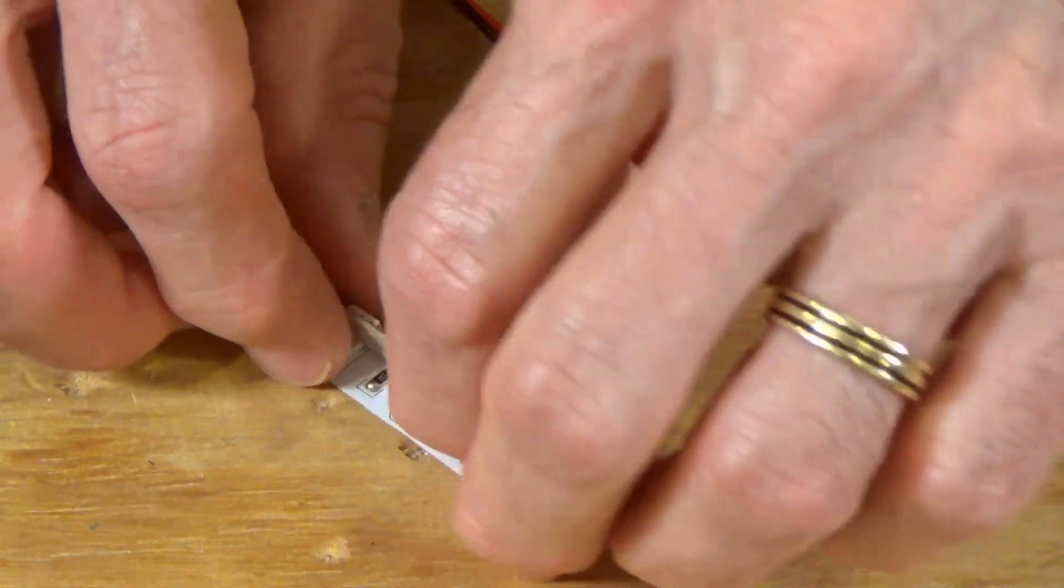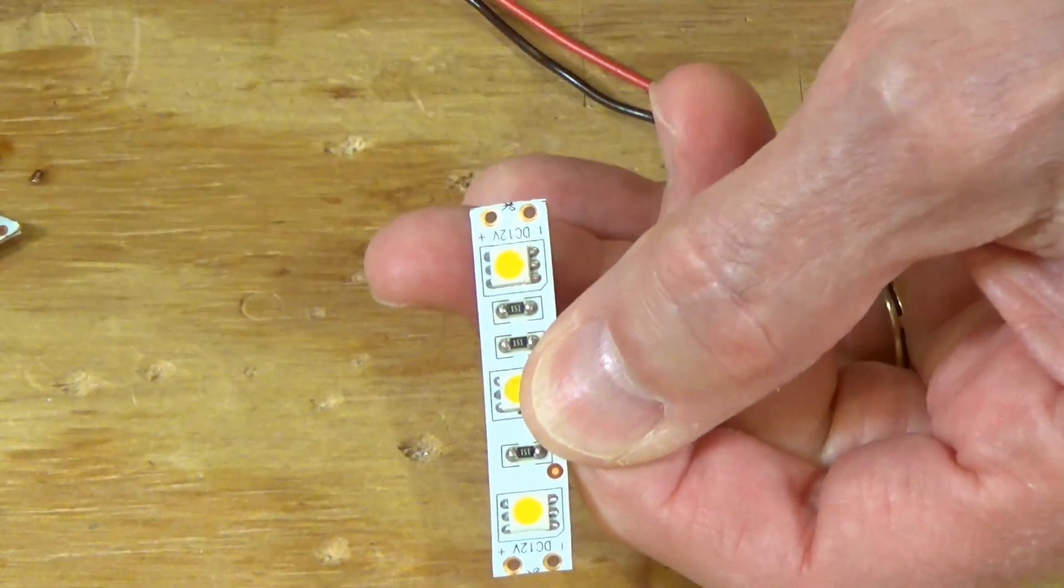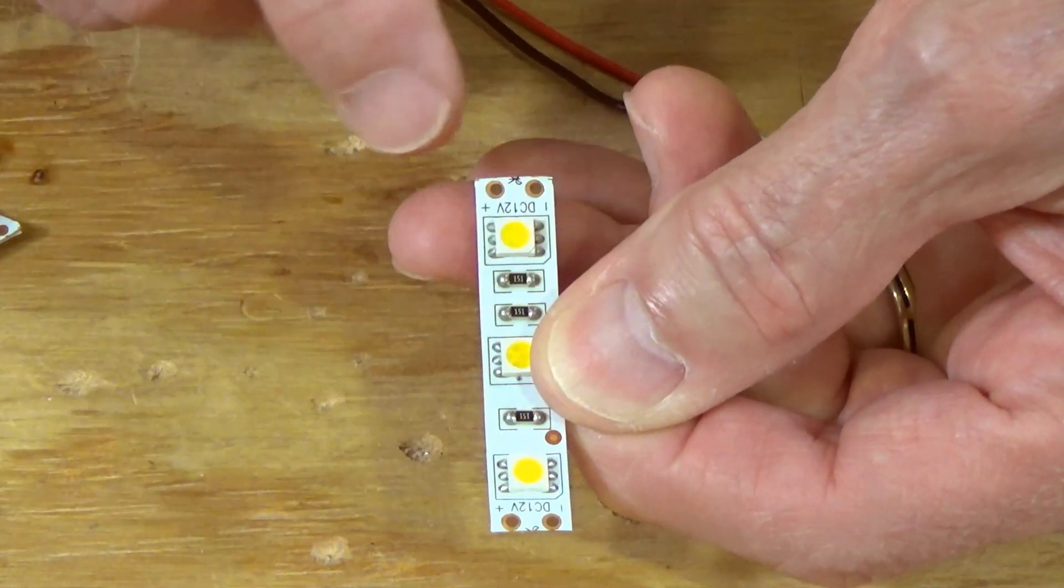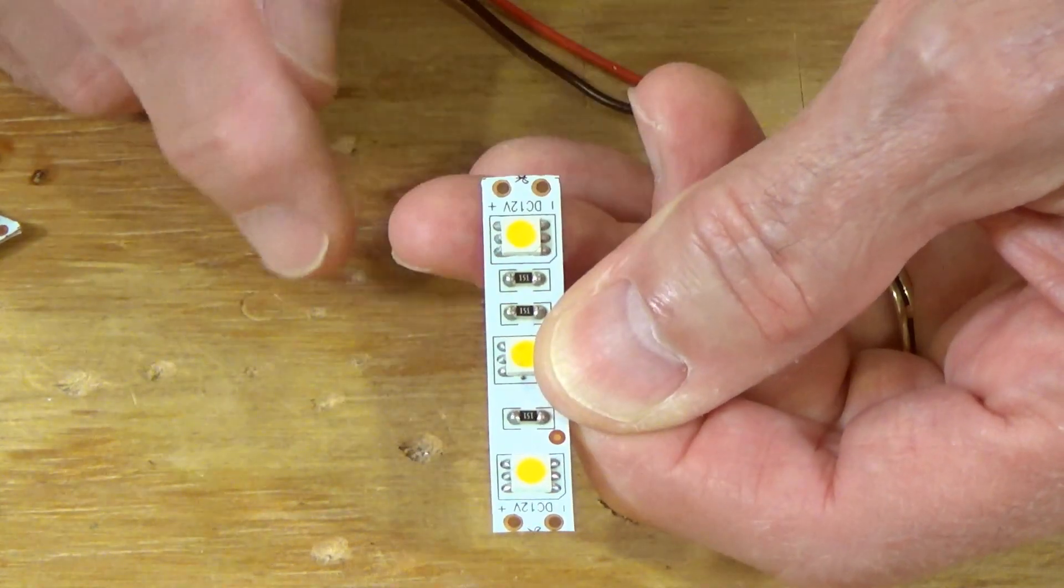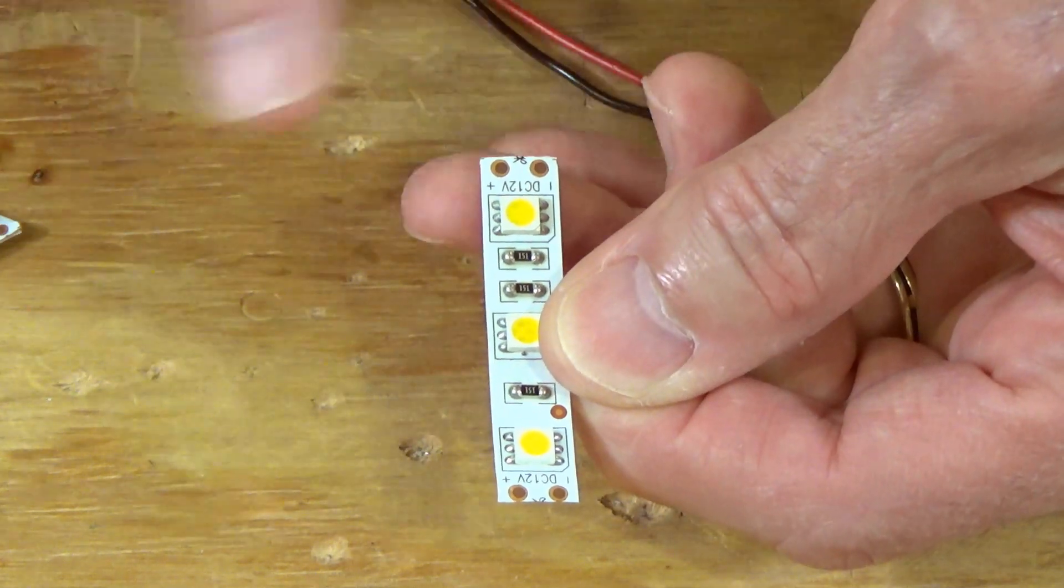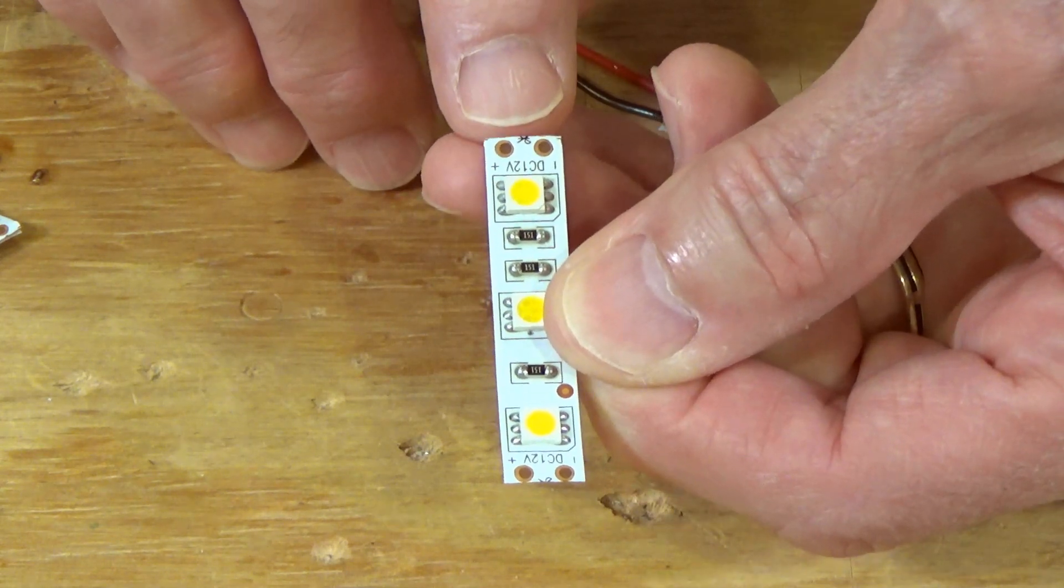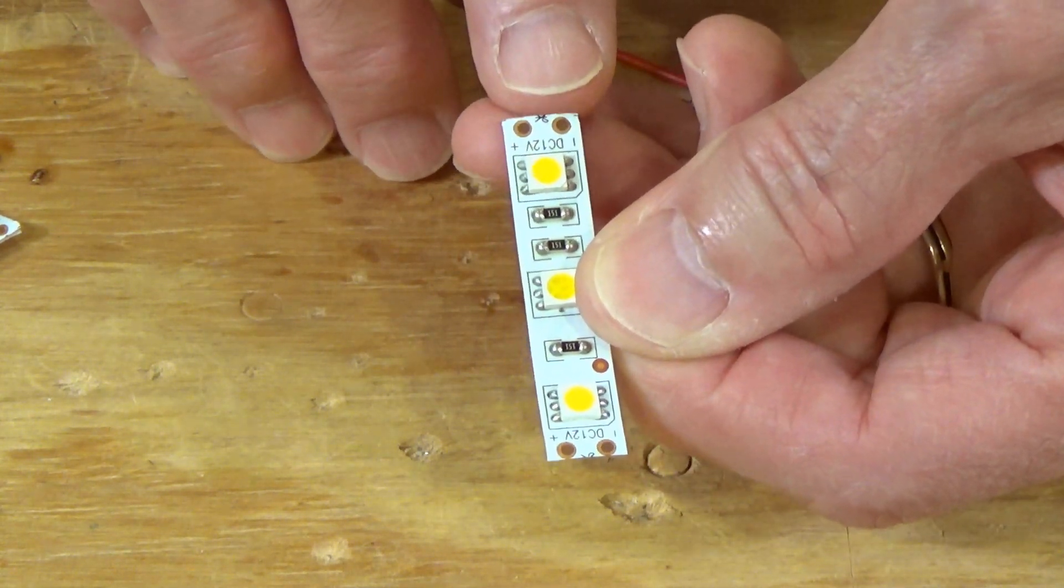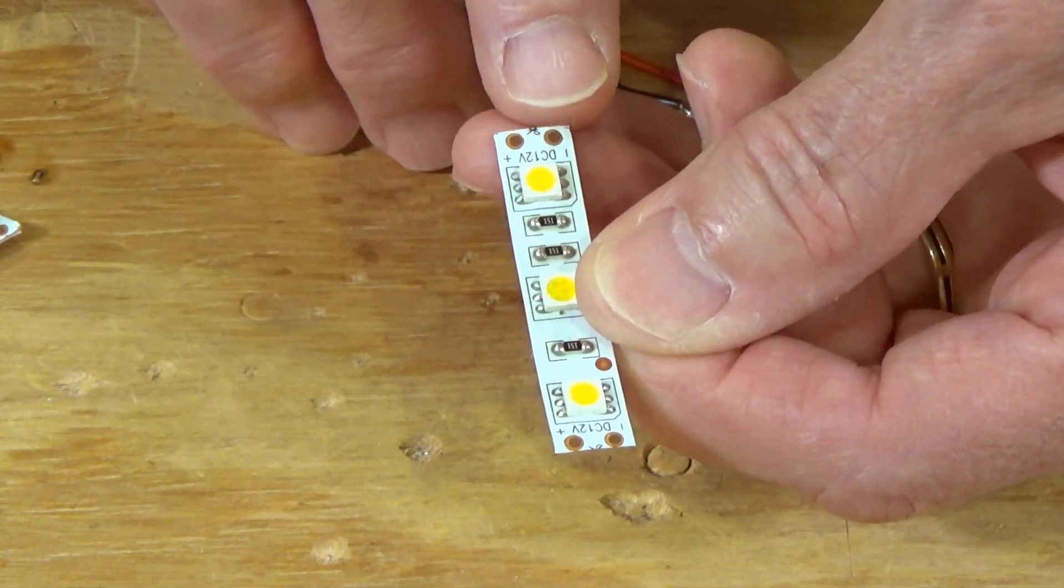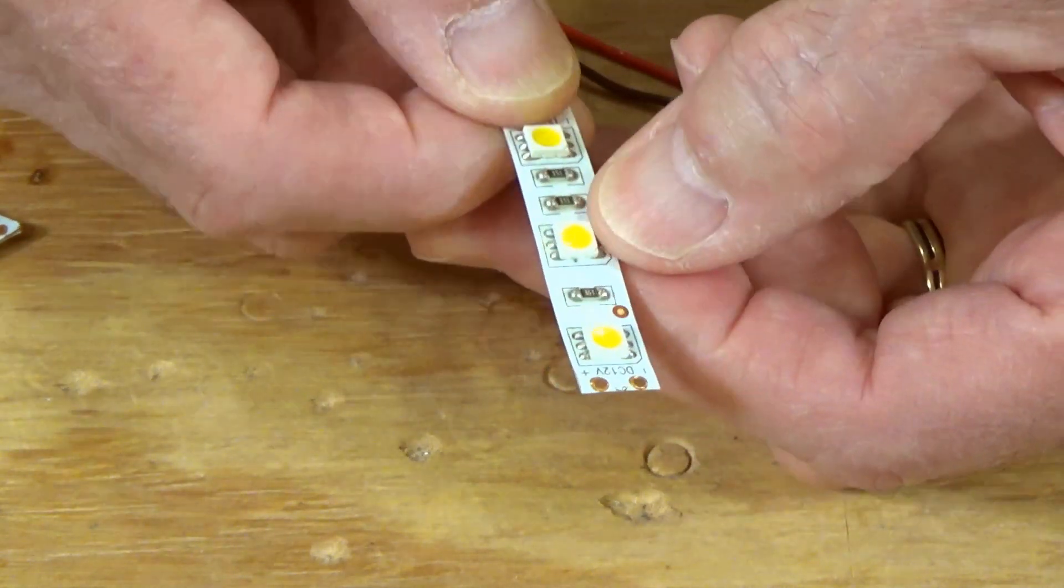So basically, we have our little cut section here and you cannot cut anywhere else because it will destroy the circuit internally. You can only cut at these cut marks on the rolls. These are 12 volt DC powered devices. You just hook up a positive and a negative to a 12 volt source and you've got light and it's fairly bright.